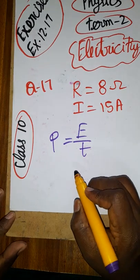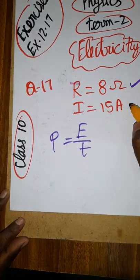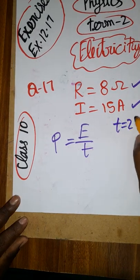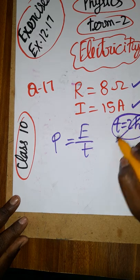Actually in this problem, they are asking about the power. Resistance is given, current is given, time is given as 2 hours which is not required, time no need to use.